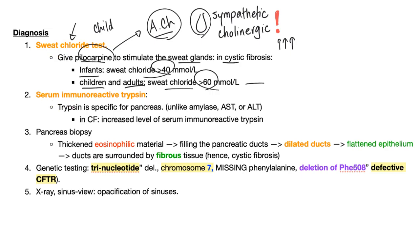There is another test called serum immunoreactive trypsin. Trypsin is specific for the pancreas, unlike amylase which is not specific because there is also salivary amylase. AST and ALT can happen in liver disease. In cystic fibrosis, you have increased level of serum immunoreactive trypsin — some call it serum immunoreactive trypsinogen.